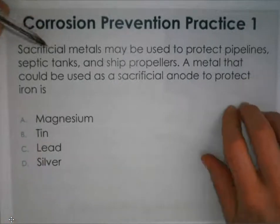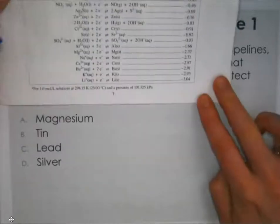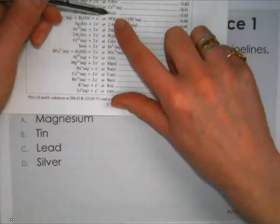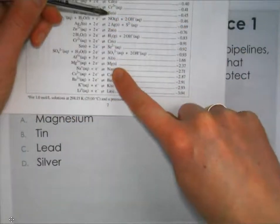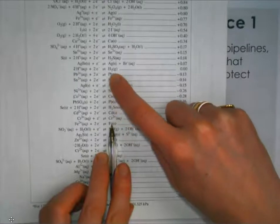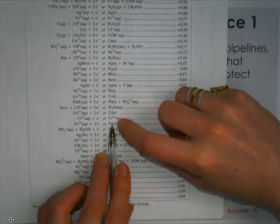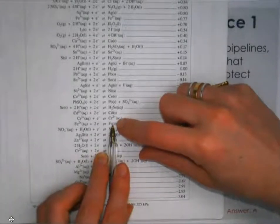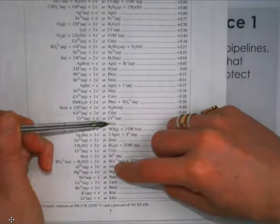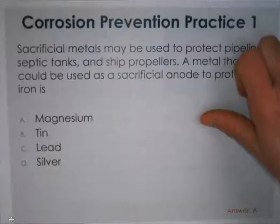Practice: sacrificial metals may be used to protect pipelines, septic tanks, and ship propellers. A metal that could be used as a sacrificial anode to protect iron — you need a stronger reducing agent. Looking at the chart, magnesium is below iron, so it's appropriate. Tin, lead, and silver are all above iron on the chart, making them weaker reducing agents. The answer is magnesium. A useful test-taking technique: one option is the odd one out — only one substance is below iron while the other three are above.